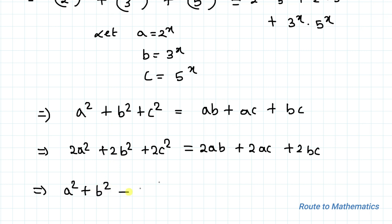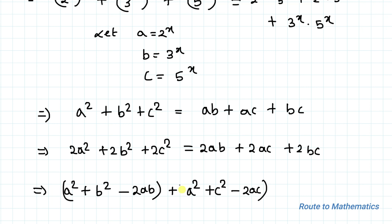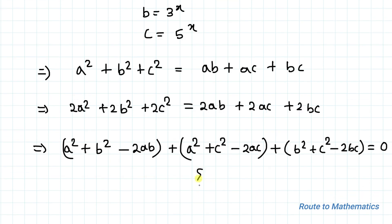Grouping the terms: I can write a² + b² - 2ab, then a² + c² - 2ac, and b² + c² - 2bc, all equal to zero. We recognize the algebraic identity: (a - b)² equals a² + b² - 2ab.